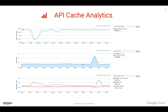Another advantage is API cache analytics. Whenever the cache gets hit, Apigee can determine whether a request is going through cache or all the way to the target and back. Apigee provides intelligent analytics where you can drill down based on all the metrics and dimensions.